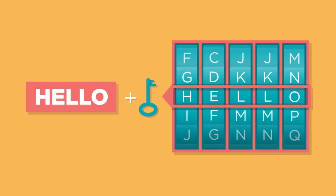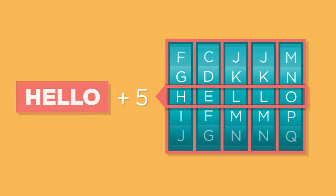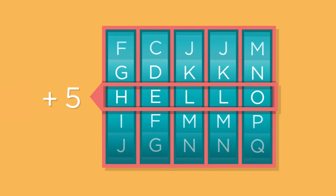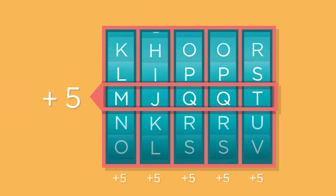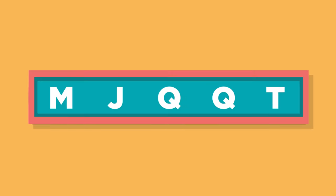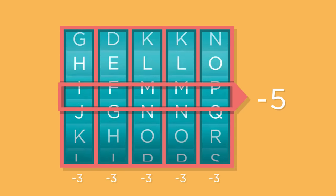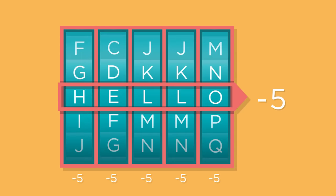For example, if your original message is "hello," then using the Caesar's cipher algorithm with a key of five, the encrypted message would be this. To decrypt the message, the recipient would simply use the key to reverse the process.